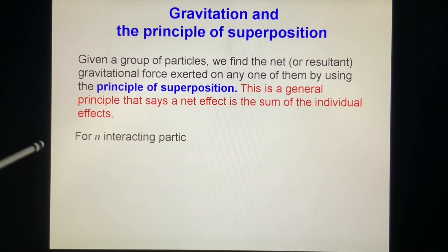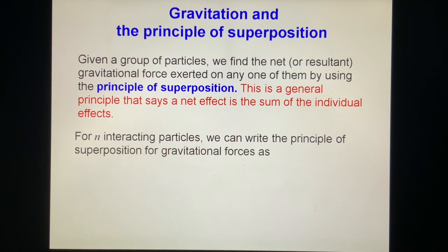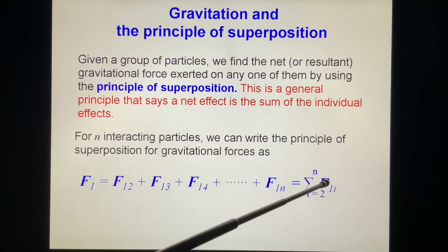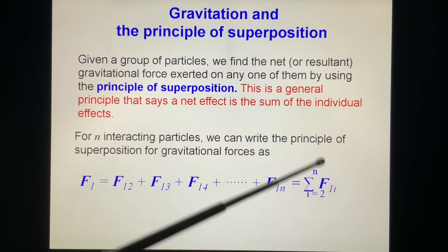For n-interacting particles, we can write the principle of superposition for gravitational forces as the force acting on particle 1 equal to F12 plus F13 plus F14 plus F1n. Or it's sigma F1i, i from 2 to n.